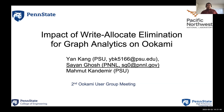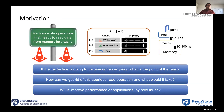The work is about graph analytics, which is an irregular kind of application area, especially the impact of write allocate elimination, which I will explain. The motivation is that memory write operations first need to read data from memory into the cache.